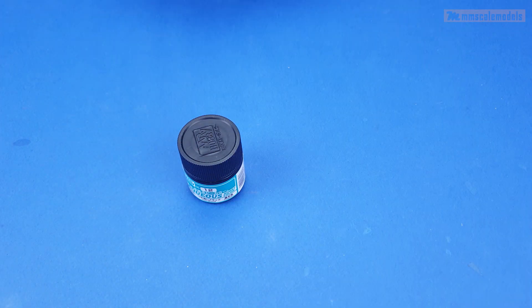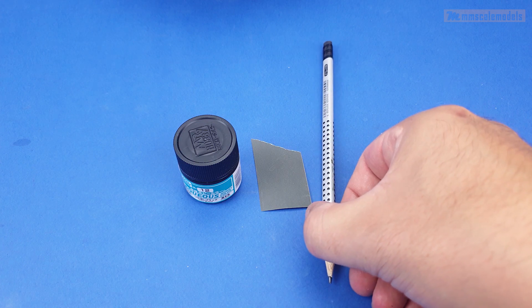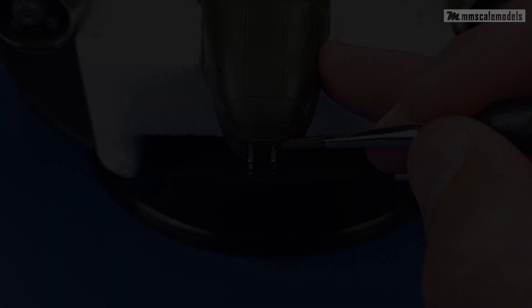All that we need is some flat black paint, 800 grit sandpaper, a regular graphite pencil minus HB and a silicon brush. Q-tips work too but have less precision.